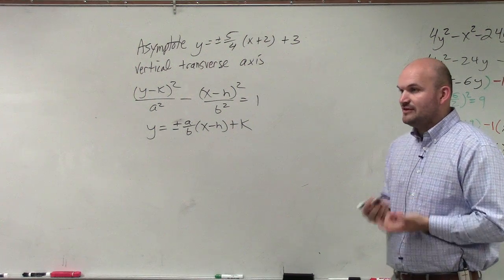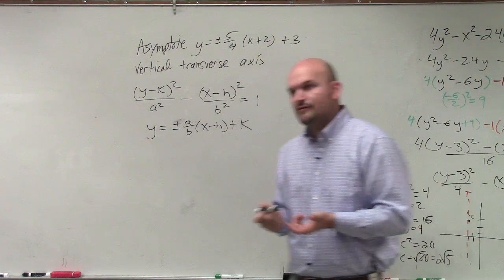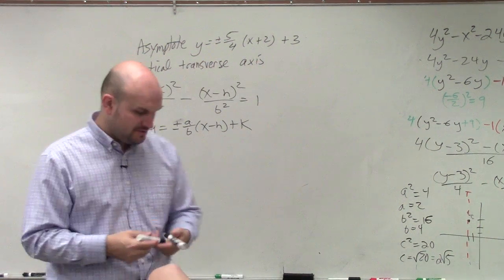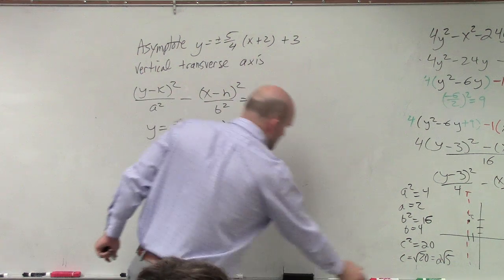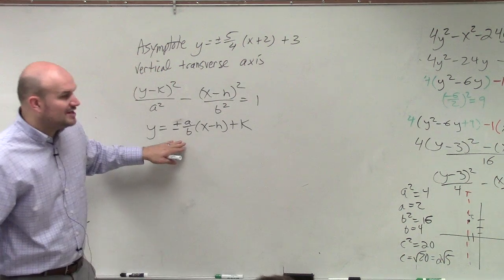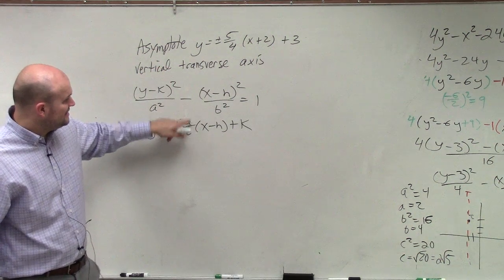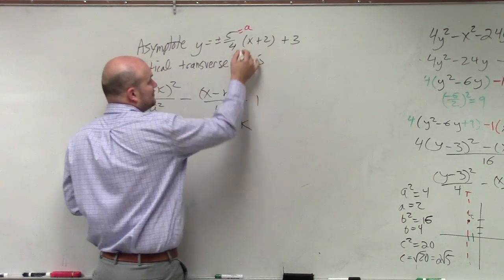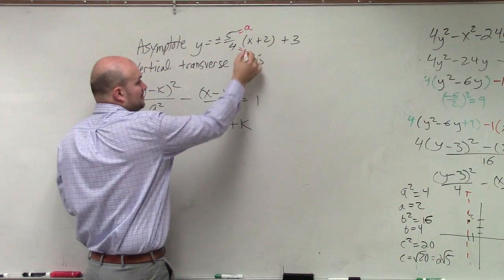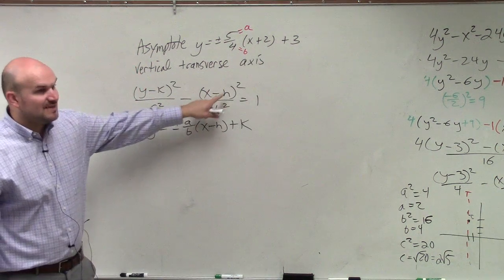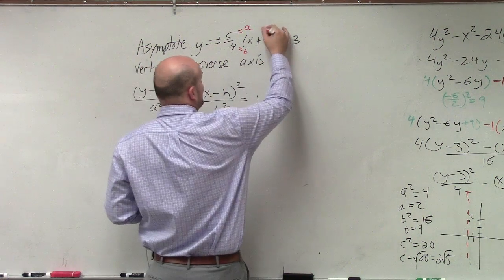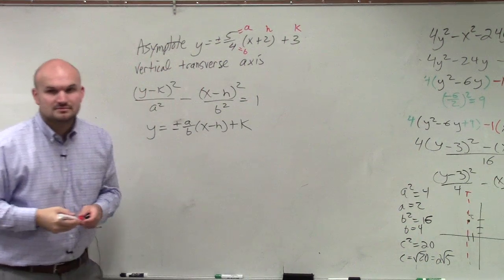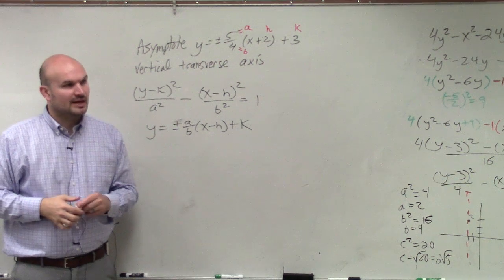So now we just got to figure out what information we have. Let's figure out our a, our b, our h, and our k. What's nice about being given the equation of the asymptote — do you guys see how 5 is equal to a and 4 is equal to b? It's x minus h, so that's basically your h, and that's your k.